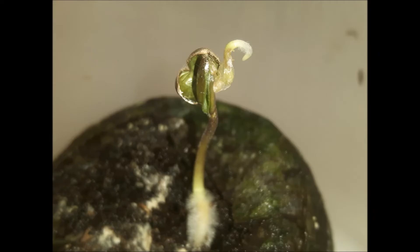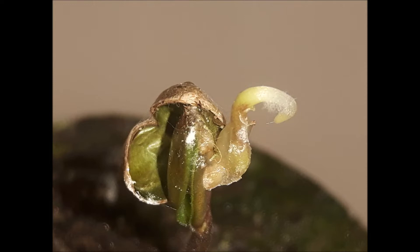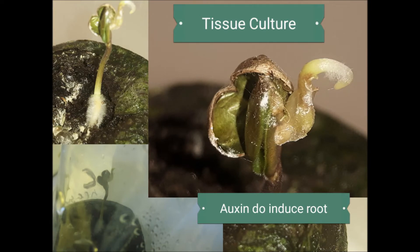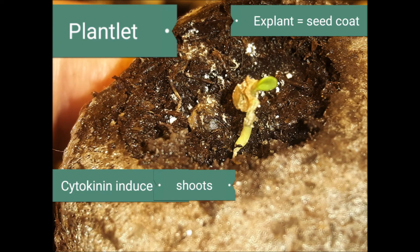Here, you can see the radicle on the side there and the cotyledon leaves still in the centre, and then the radical triple response — how it's got the hook and the thickening. You can see it's still going to sprout, no worries, so I just had to take it off and separate it.